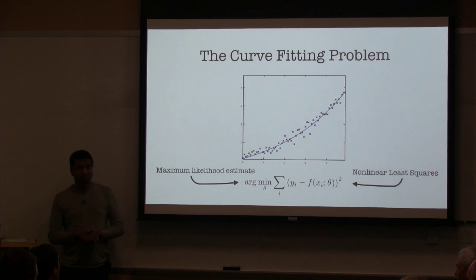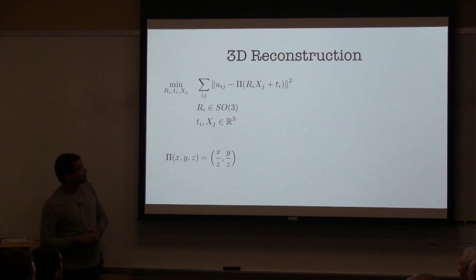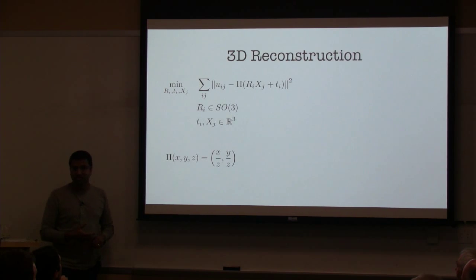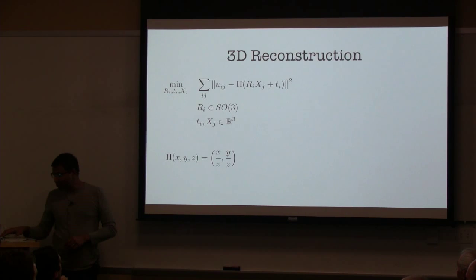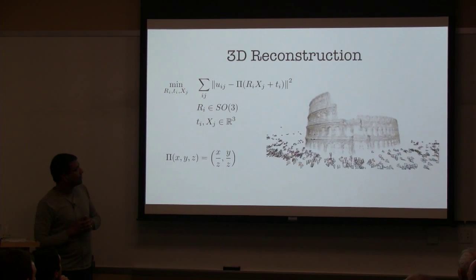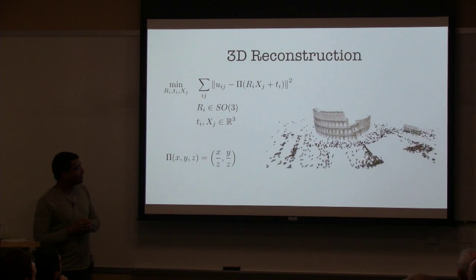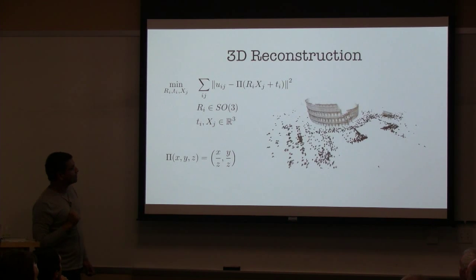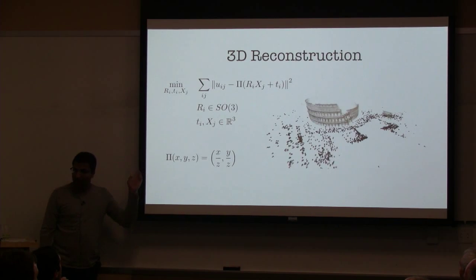It is surprisingly rich, even though it can be stated so simply. One problem I've spent a considerable part of my career solving is the 3D reconstruction problem: determining the rotation and translation of cameras and the 3D structure of a scene by observing images. The images are u_ij, r_i and t_i are the rotation and translation of the cameras, and x_j are the 3D points. To show you this can be solved at scale, here's a video of a model of the Colosseum built from pictures downloaded from Flickr. My co-author on that paper, Noah Snavely, is right over there — one of the world's leading authorities on this. This is how I got my start working on this problem.